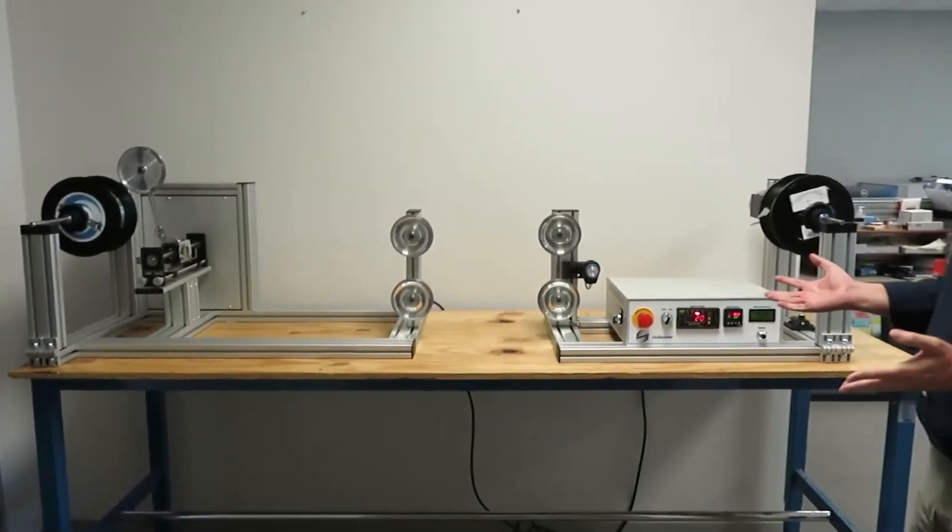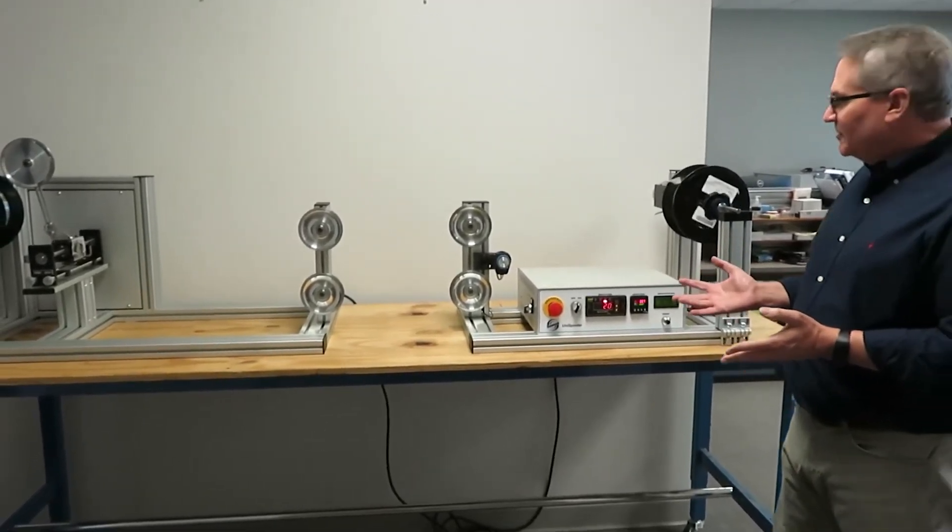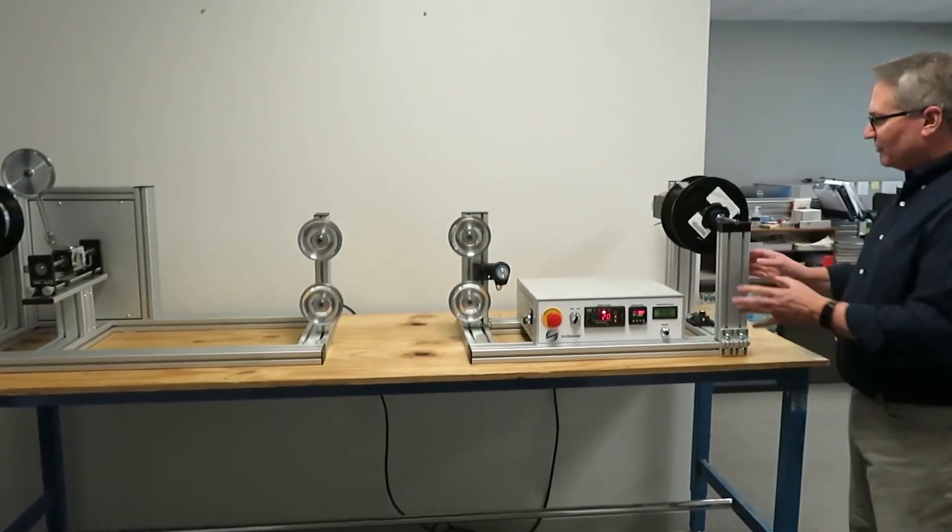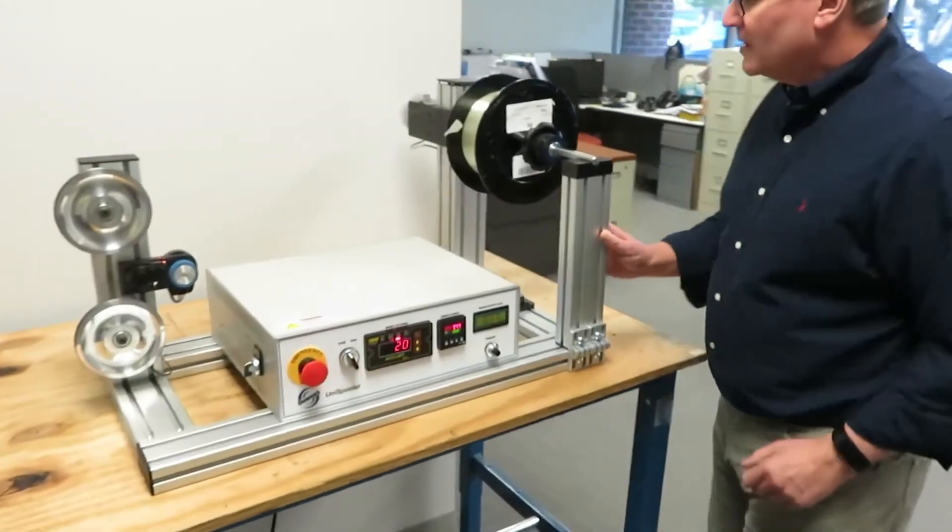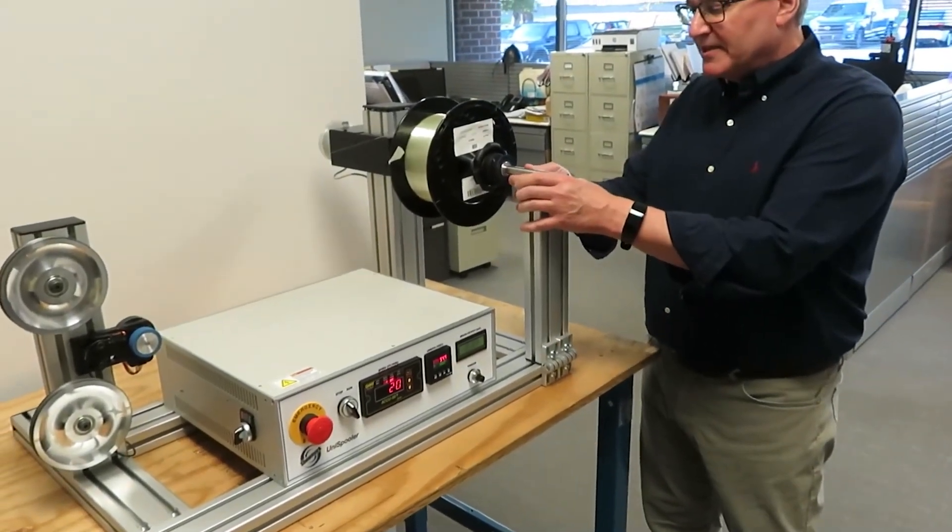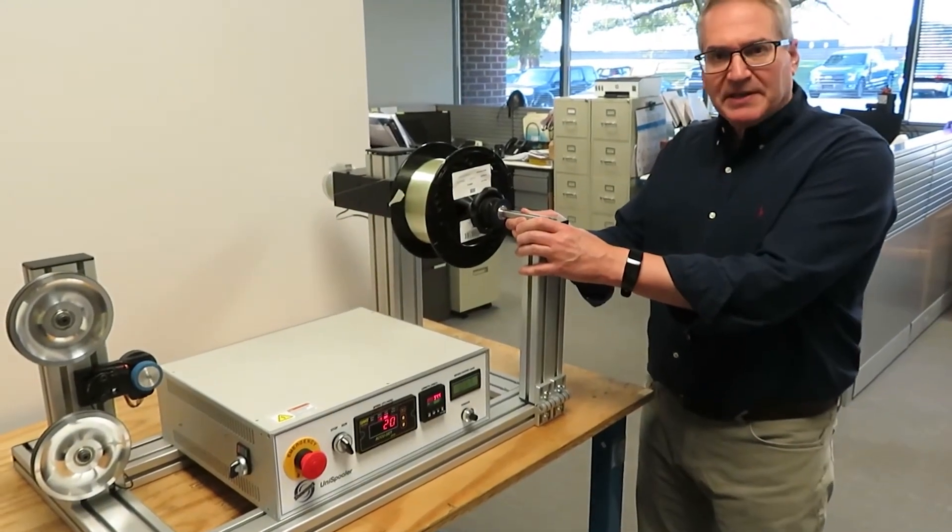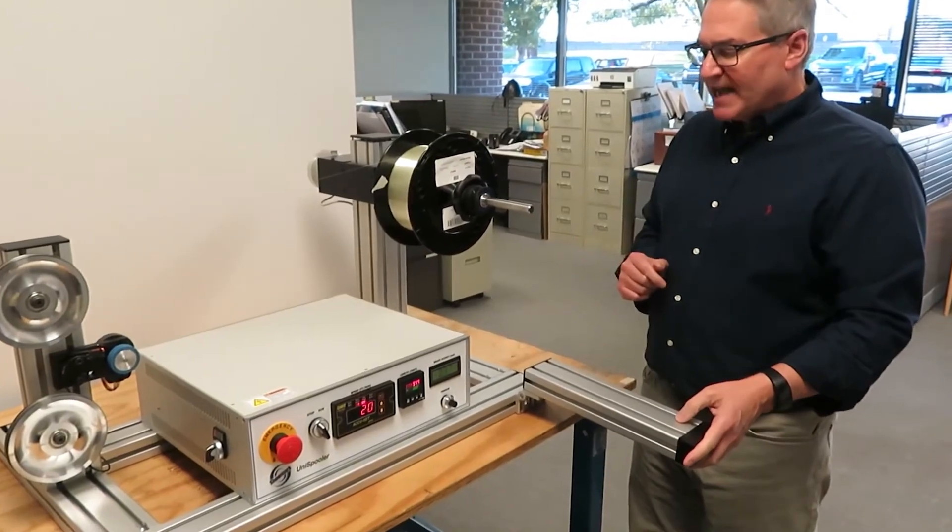This particular machine has a few interesting features on it. One of them is our tailstocks which here I'll stop it momentarily. The tailstocks are used whenever you have a spool that might be heavier than what can be supported by just a plain cantilevered shaft.